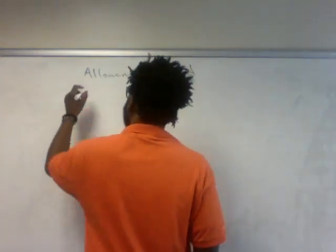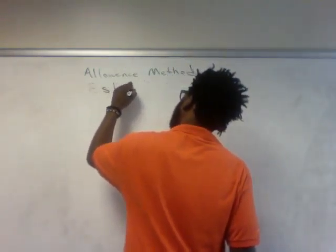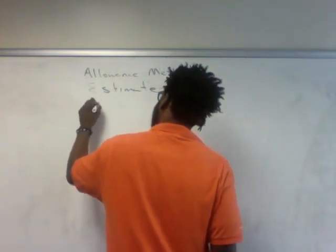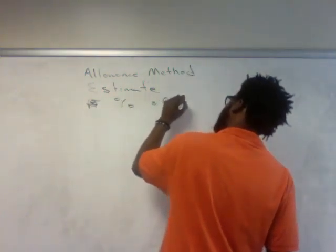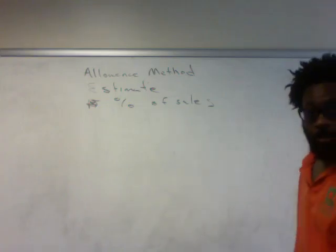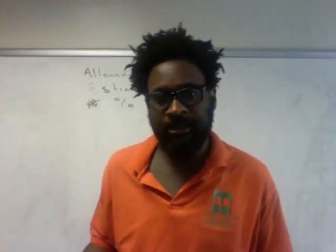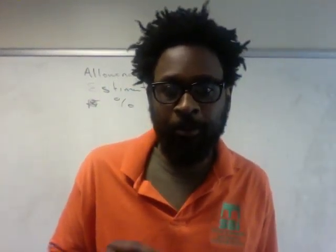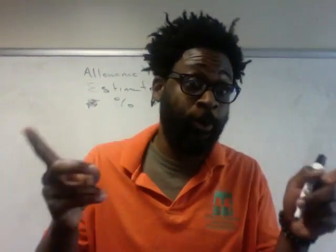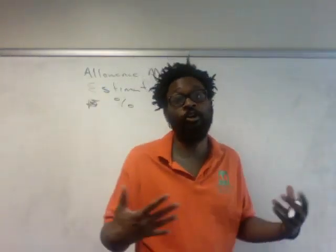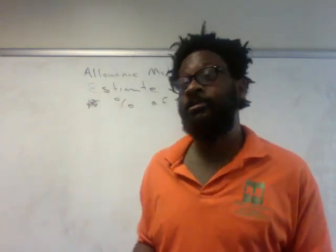So let's talk about percentage of sales. Under percentage of sales, basically what you do is you take a particular percent based on previous experience or industry experience about your customer base. Whatever that percent is that's given to you, you would take that percent and multiply it times credit sales — meaning your sales that you sold on an account. Any sales generated on an account, you multiply it times the percentage.